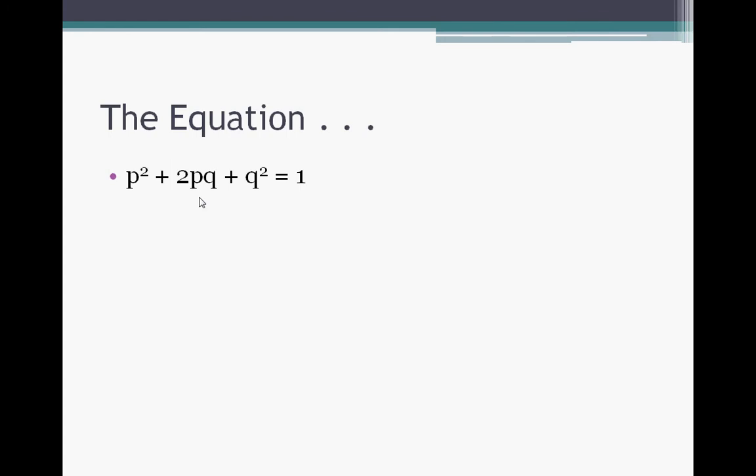So if you remember which one equals which genotype, it becomes a whole lot easier to figure out what this problem means. p² is the homozygous dominant, which I'm going to use the letter A as my letter. So the big A, big A genotype.